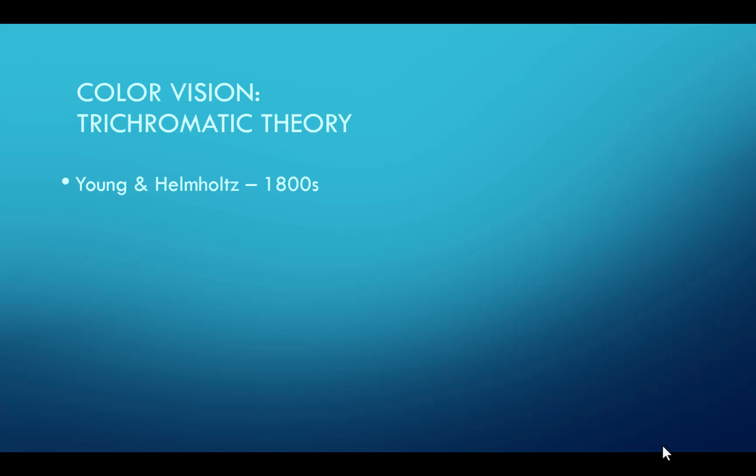In the 1800s, Young and Helmholtz proposed that the eye detects three primary colors because it has three basic types of cones that detect these colors. So one cone for red, one cone for green, and one cone for blue.